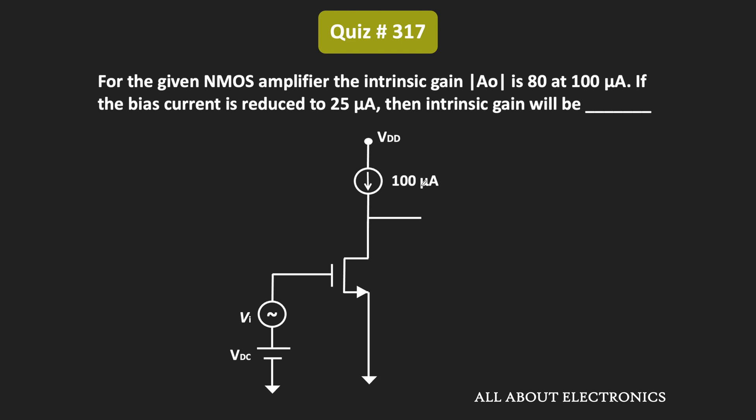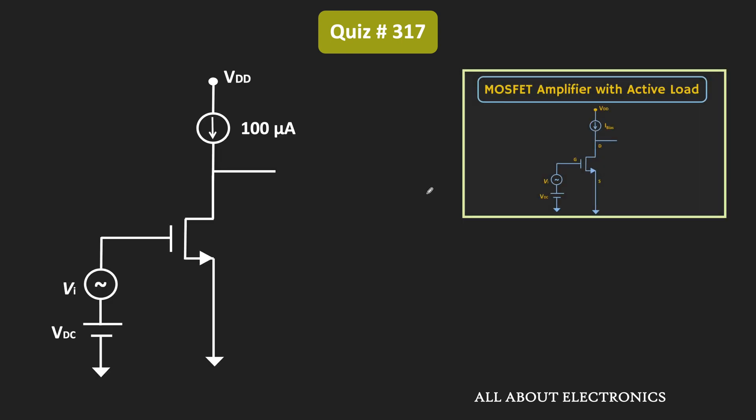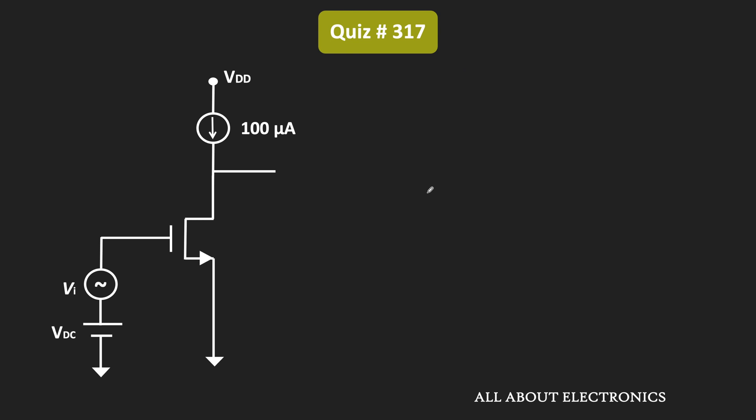So first of all, we should be aware about the relationship between the intrinsic gain and the drain current. So if you have followed the recent video on the main channel, then you must be aware that for the amplifier, this intrinsic gain A0 can be given as GM times R0, where this GM is the transconductance and this R0 is the output impedance of this MOSFET. So as you are